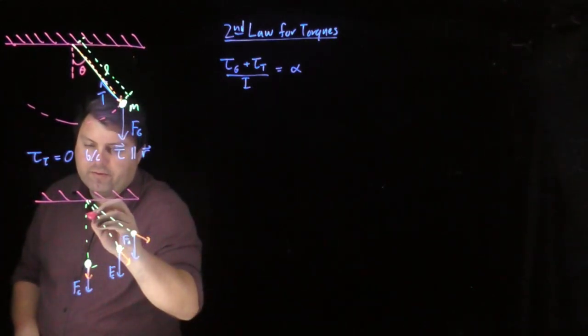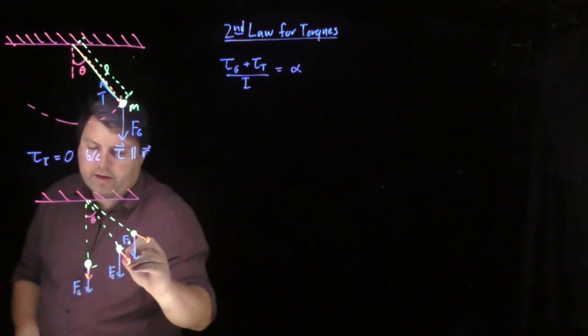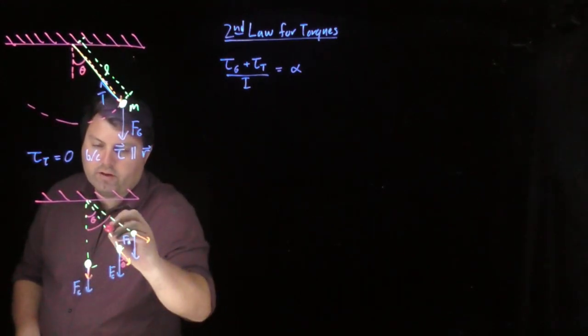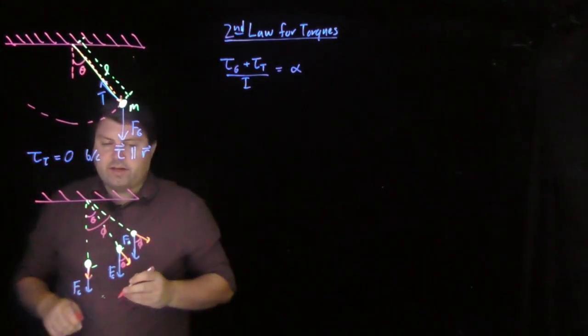And whatever angle we have from the vertical, so this angle being theta, is also going to be this angle. This angle, we'll call this now phi, is going to be this angle.